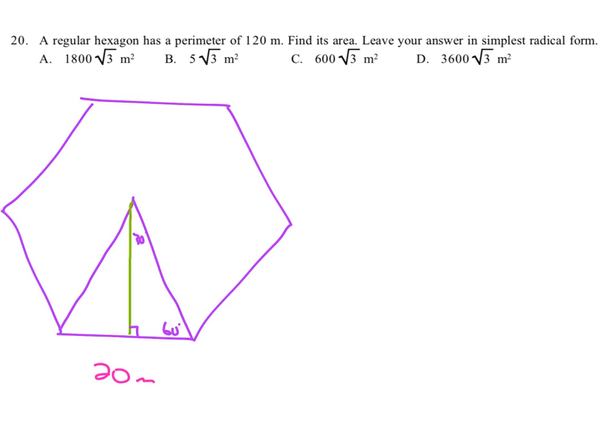Okay. That would also give us a length here. This length here would be 10, and since that's the short leg of a 30-60-90, the long leg, which is the apothem, would be 10 root 3.